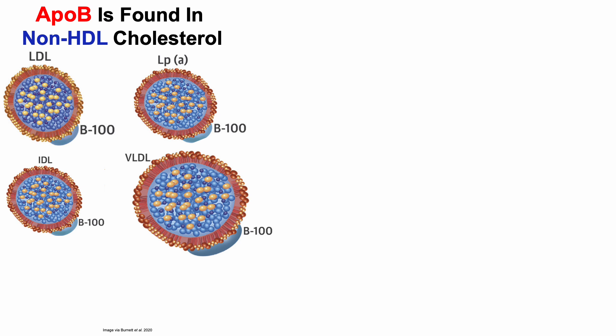APO-B is found in non-HDL cholesterol. More specifically, it's in LDL, lipoprotein A, IDL or intermediate density lipoprotein, and VLDL, very low density lipoprotein. And there we can see APO-B100 found in each of these lipoproteins, or APO-B for short.